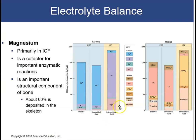Magnesium is primarily seen in the ICF. It is important because it acts as a cofactor for many enzymatic reactions — if the cofactor isn't present, the enzyme will not function. Magnesium is also an important structural component of bone, with about 60% of all magnesium in the body found in the skeleton.